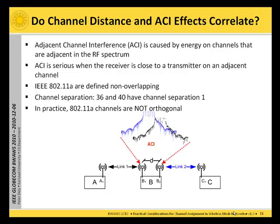ACI is very serious when the receiver is close to a transmitter on the adjacent channel, as depicted in the picture below. Here we have one receiver, card B2, and a sender, card B1. The sender has a much higher power than the received signal on B2, and thereby ACI is very crucial here. ACI should not happen to a large extent in 802.11a because in that standard the channels are defined in a non-overlapping way.